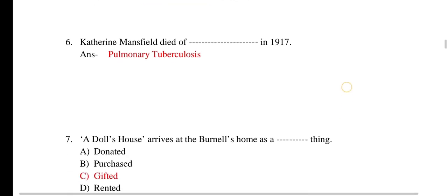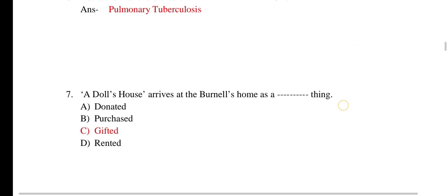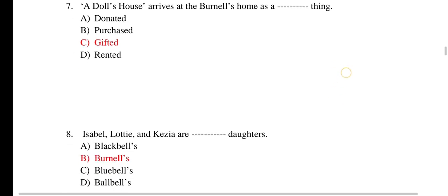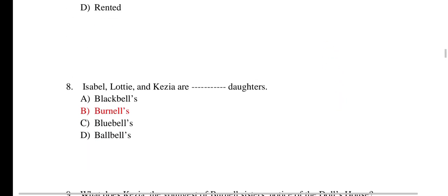The next question is: 'The Doll's House arrives at the Burnell's home as a ___ thing.' The correct answer is gifted thing. The Doll's House was gifted to the Burnell girls. The next question: 'Isabel, Lotty, and Kezia are ___ daughters.' The correct answer is Burnell's daughters.